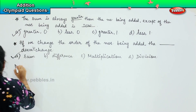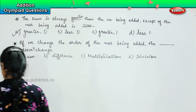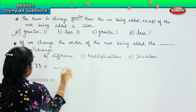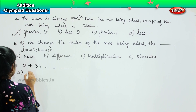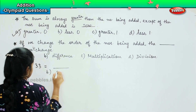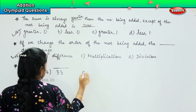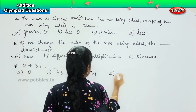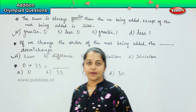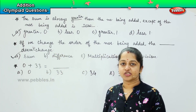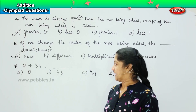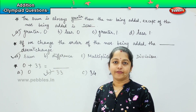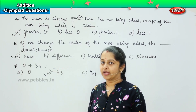Here is your next question: 0 plus 33 equals blank. Options are: Option A — 0; Option B — 33; Option C — 34; Option D — 30. It's very simple. What is 0 plus 33? Excellent — it is Option B, 33. This is the second rule of addition.